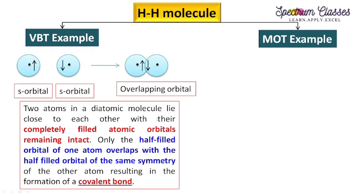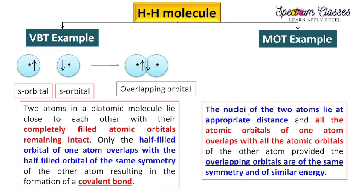Valence bond theory states that in a diatomic molecule, two atomic orbitals lie close to each other and completely filled atomic orbitals remain intact — they do not take part in bonding. Only the half-filled orbital of one atom overlaps with the half-filled orbital of the same symmetry of the other atom, resulting in the formation of a covalent bond. Same symmetry is important and will be explained with examples.